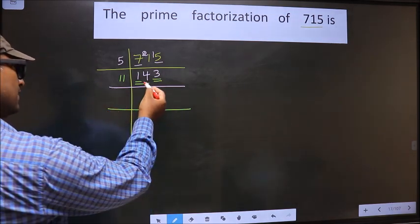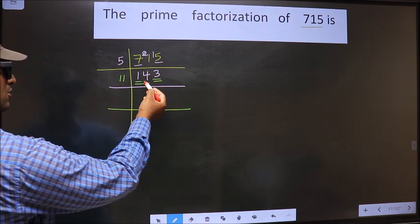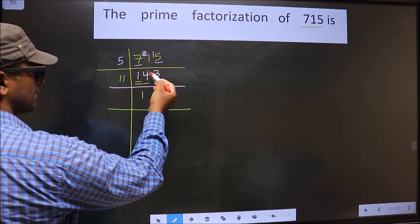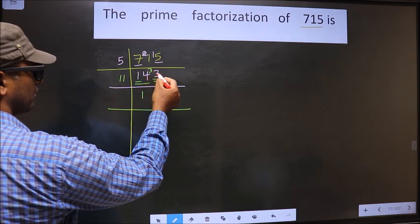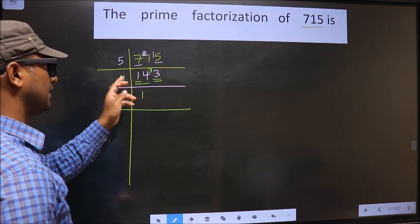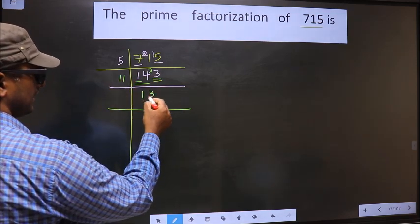Now here we have 14. A number close to 14 in the 11 table is 11×1=11. 14-11=3. 3 carried forward makes it 33. When do we get 33 in the 11 table? 11×3=33.